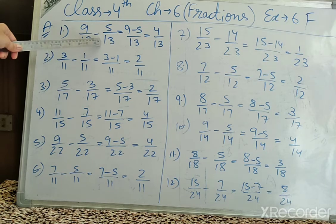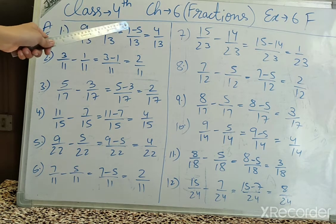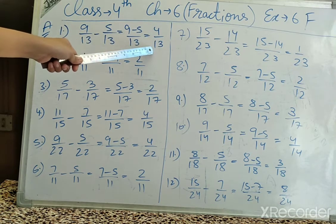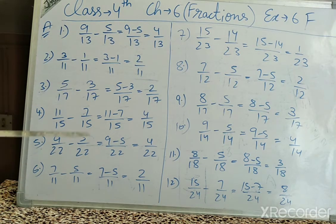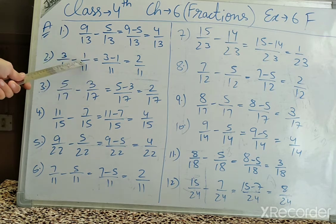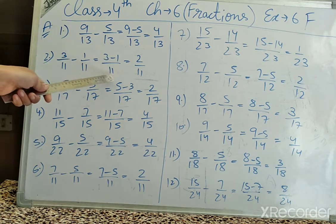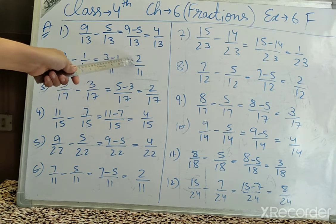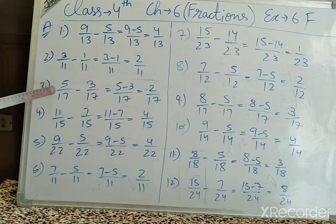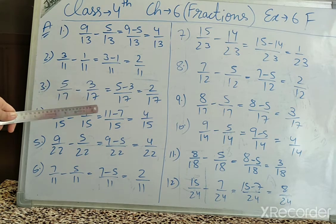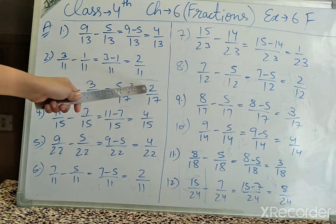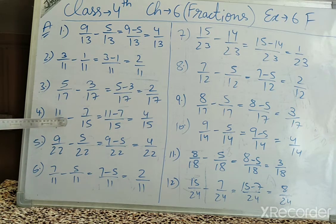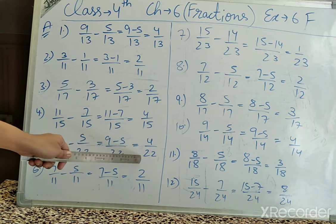As we did in the previous exercise, denominator is the same so 9 minus 5 is 4, giving us 4 upon 13. Next, 3 upon 11 minus 1 upon 11 — 3 minus 1 is 2, so 2 upon 11. Then 5 upon 17 minus 3 upon 17 — 5 minus 3 is 2, giving 2 upon 17. 11 minus 7 is 4 upon 15. 9 minus 5 is 4 upon 22.